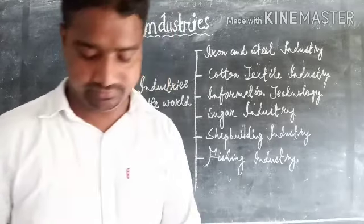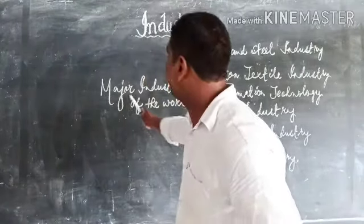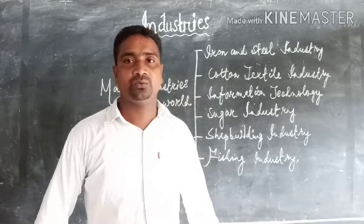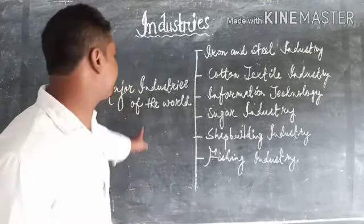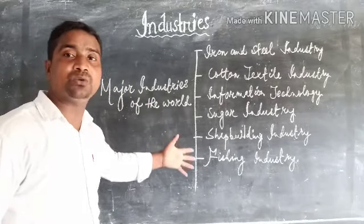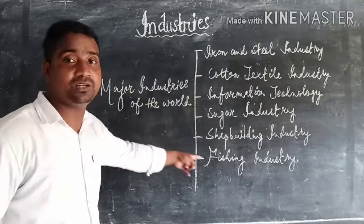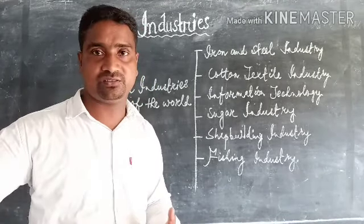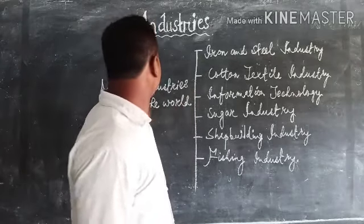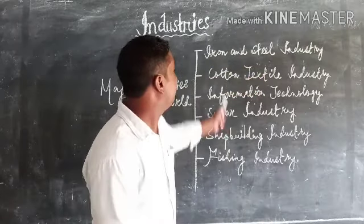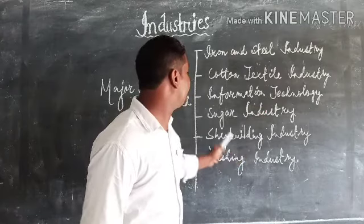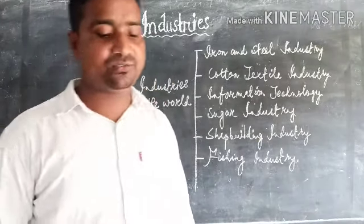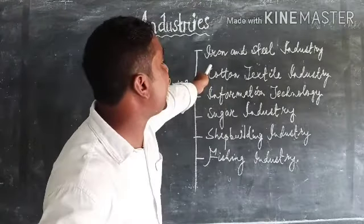Dear students, now we shall see major industries of the world. There are so many industries all over the world, but we are going to see the major ones — without which other industries can't function. The major industries of the world are: iron and steel industry, cotton textile industry, information technology, sugar industry, shipbuilding industry, and fishing industry. Let us first see the iron and steel industry.